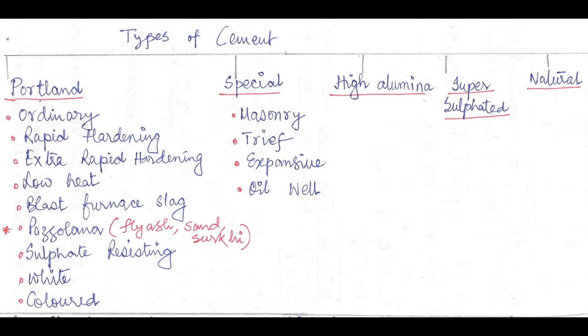In case of Portland cement, it can be further divided as ordinary, rapid hardening, extra rapid hardening, low heat, and blast furnace slag.